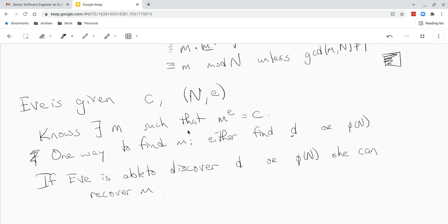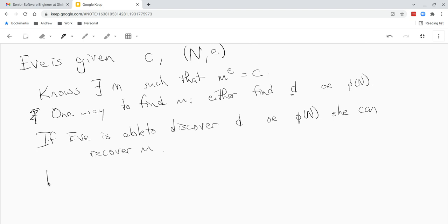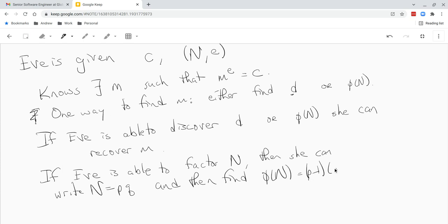So how can she find phi of n? Well, one way is to factor n. So now we can say if Eve is able to factor n, then she can write n equals p times q and then find phi of n, which is p minus 1 times q minus 1.